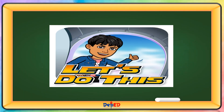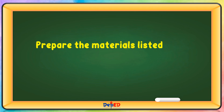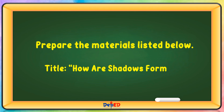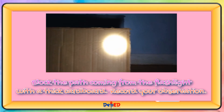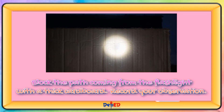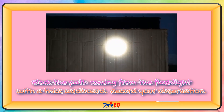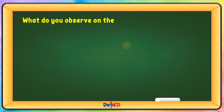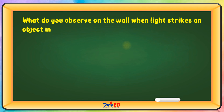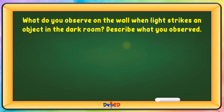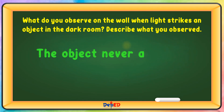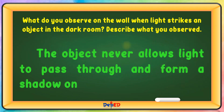Let's do this. Prepare the materials listed below. The title of the experiment: How are shadows formed? Block the path coming from the flashlight with a thick cardboard and record your observation. What do you observe on the wall when light strikes an object in the dark room? The object never allows light to pass through and forms a shadow on the wall.